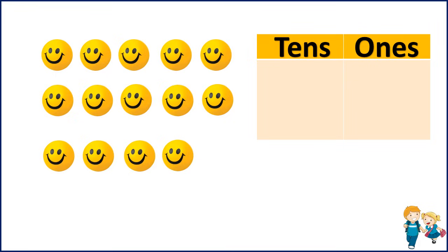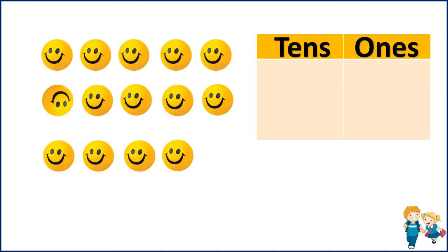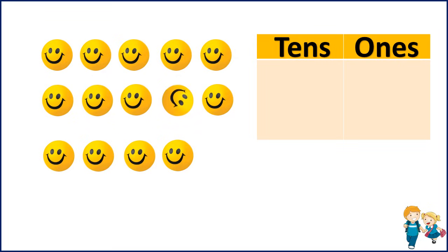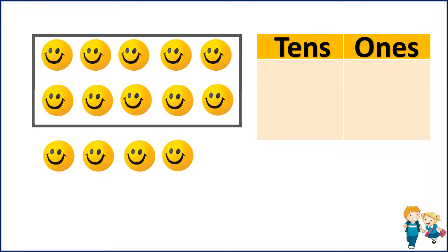Now let's start counting the number of balls: 1, 2, 3, 4, 5, 6, 7, 8, 9, 10. So this is our first group. This means 1 ten.